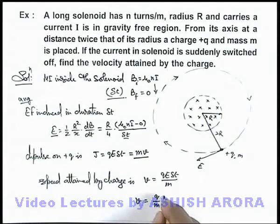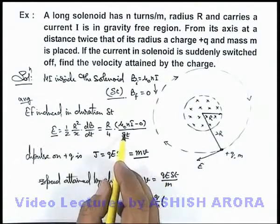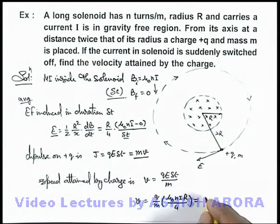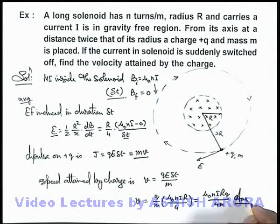Here EΔt we can write as μ₀nI R by 4. So the final result we are getting is μ₀nIRq divided by 4m. That will be the answer to this problem.